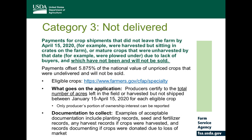Category three covers situations where crops were not delivered. This payment offsets roughly 5.875 percent of the national value of unpriced crops that were undelivered and will not be sold. Unlike categories one and two which use pounds, category three uses acres — specifically acres left in the field or unharvested between January 15th and April 15th. Only producers' ownership interests in those unharvested acres are reported.